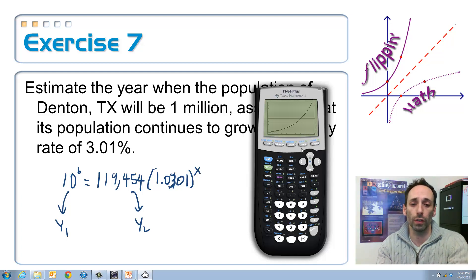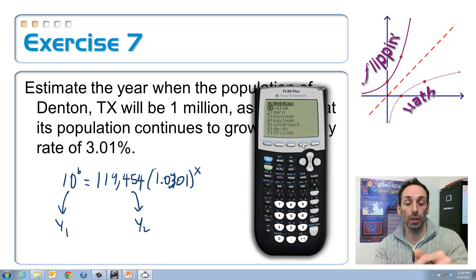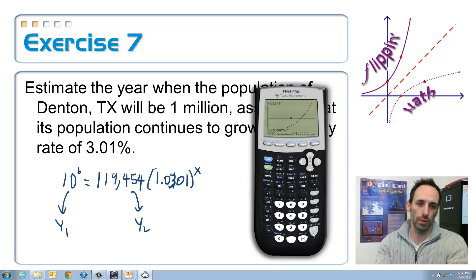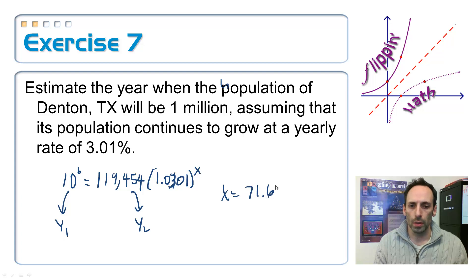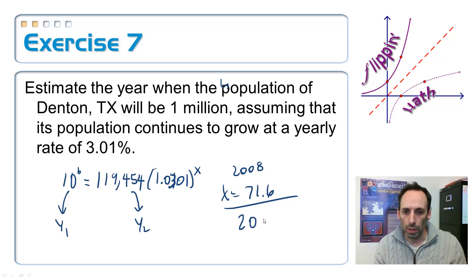It has to be able to see it in order for it to find the intersection point. And that's under 2nd, calculate for 2nd trace, the calculate menu. I'm going to choose 5. It's going to ask you a whole bunch of questions. Just ignore the questions. Just keep hitting enter like 3 times, and then it will finally tell you your value. So it looks like it's at 71.6 years. That's when we're going to be at a million. So 71.6 years. And this is from 2008. So 2008 plus this, plus our 71, we're talking about 2079.6, maybe 2080.